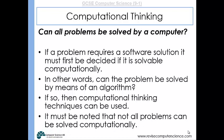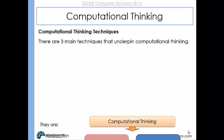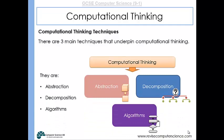But remember, not all problems can actually be solved computationally. So there are three main techniques that we will look at in GCSE that underpin computational thinking: they are abstraction, decomposition, and algorithmic thinking. And we'll look at each of those in turn now.